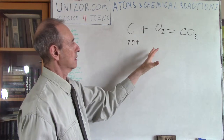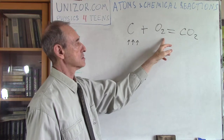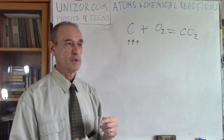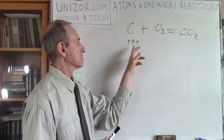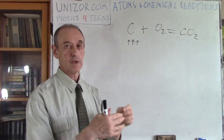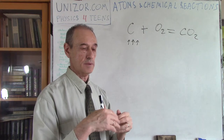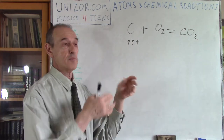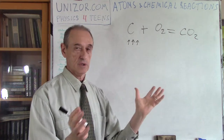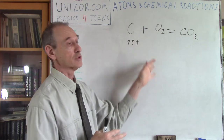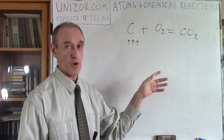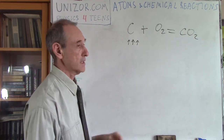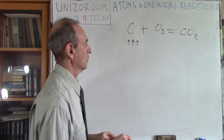So one molecule of carbon and one molecule of oxygen combined together make CO2. There is a terminology: endothermic reactions consume heat, and exothermic reactions release heat. In the beginning this reaction is endothermic — just to start it — but then as soon as we start it, it releases so much heat that it's enough not only to continue the burning process but also to release heat and light into the outside world.